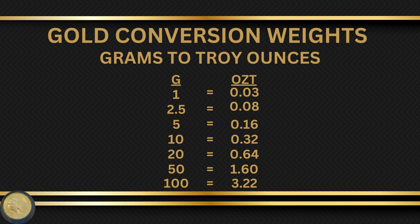Ten grams equals 0.32 troy ounces. Twenty grams equals 0.64 troy ounces. Fifty grams equals 1.60 troy ounces. And a 100 gram gold bar equals 3.22 troy ounces.